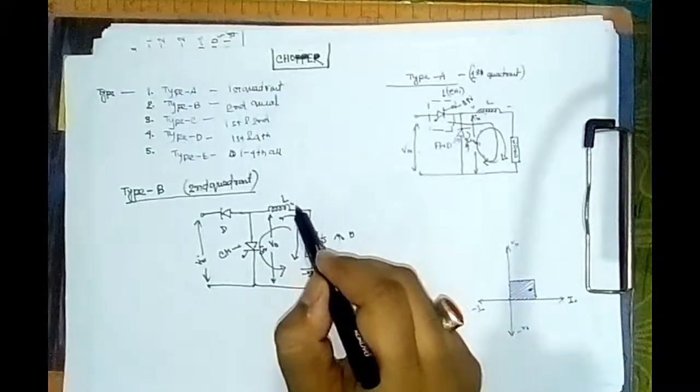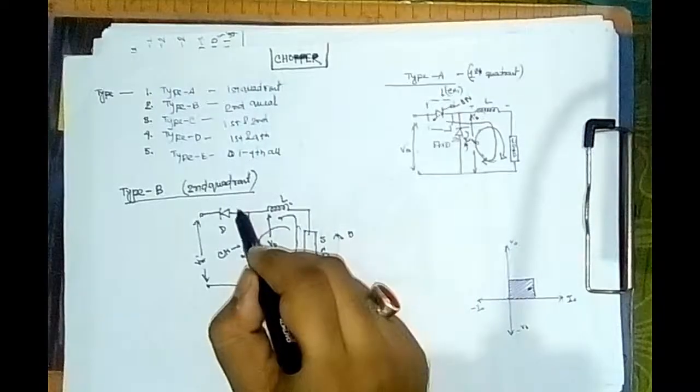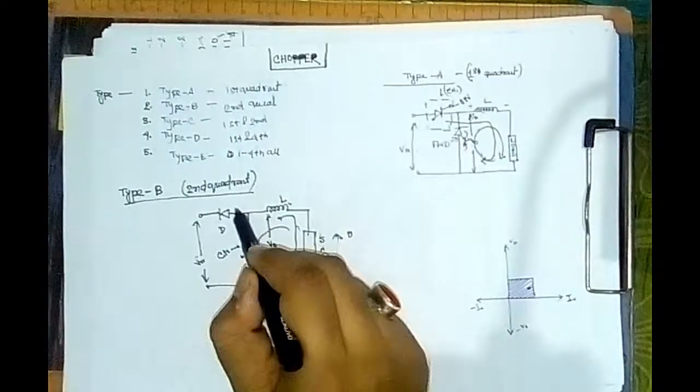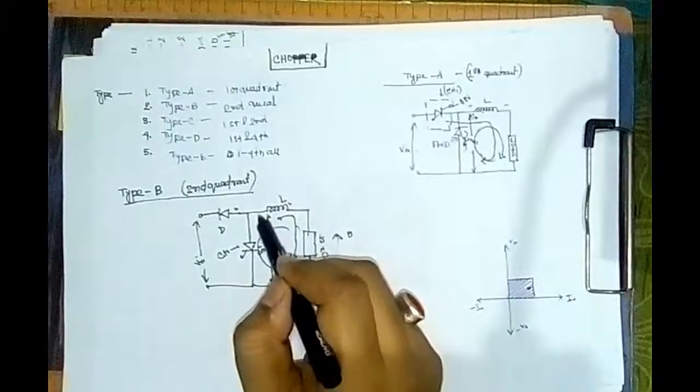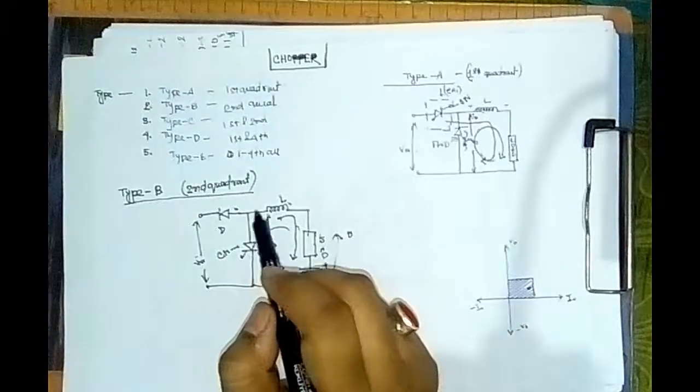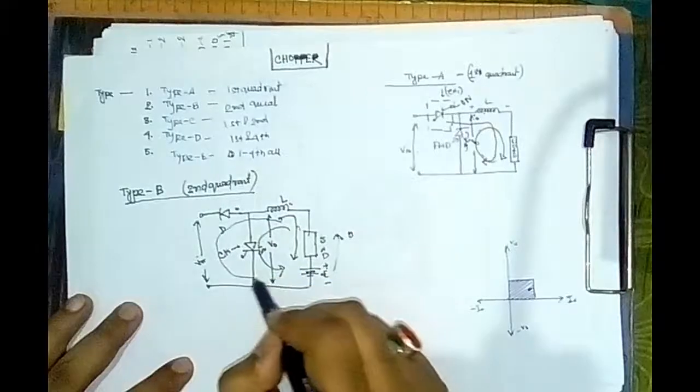So the energy stored in inductor will return through diode D. Diode D is now forward-biased, so diode D will conduct and the current flow will be in that direction.